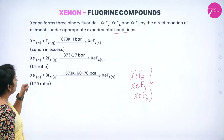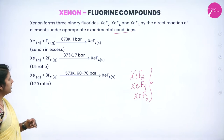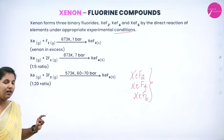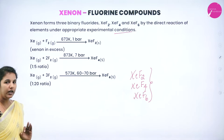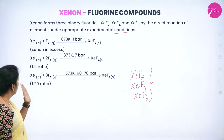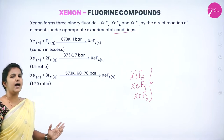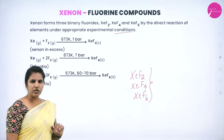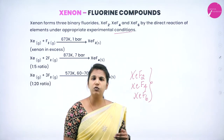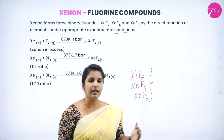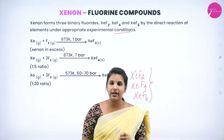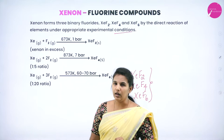When xenon and fluorine are taken in a 1:5 ratio at 7 bar pressure and 873 K, xenon tetrafluoride is obtained. When the ratio is changed to 1:20 with a pressure of 60–70 bar and temperature of 573 K, xenon hexafluoride is formed. By altering the reaction conditions, different xenon fluorine complex compounds can be obtained.